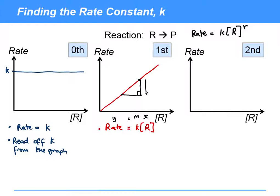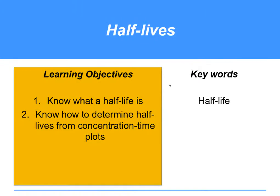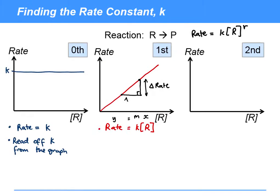then this would be change in rate and this here will be change in concentration of reactant. Effectively K equals delta rate over delta concentration of reactant. In other words, it's the gradient of the line.